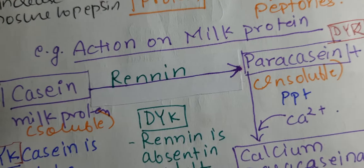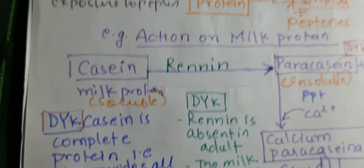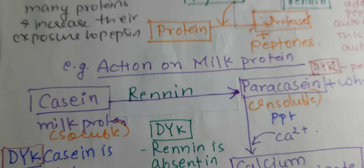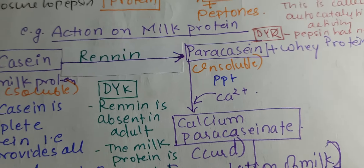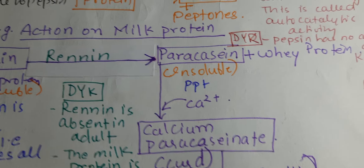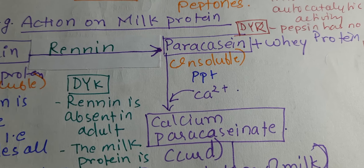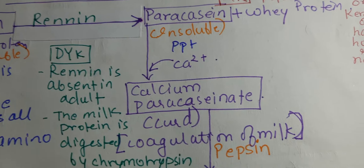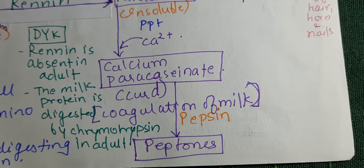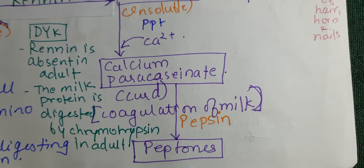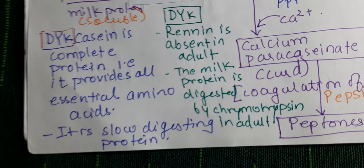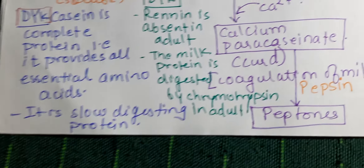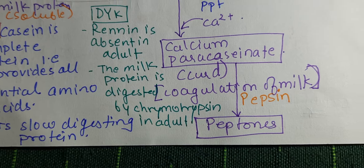Considering the action on milk protein: casein is a milk protein digested by rennin. Pro-rennin is activated to rennin by HCl. Casein, a soluble protein, is converted into insoluble para-casein by the enzyme rennin, forming whey protein. Para-casein then combines with calcium to form calcium para-caseinate — this is the curdling or coagulation of milk. This is then acted upon by pepsin and converted into peptones. Casein is a complete protein providing all essential amino acids. Rennin is absent in adults; milk protein in adults is digested by chymotrypsin, whereas rennin is present only in infants.